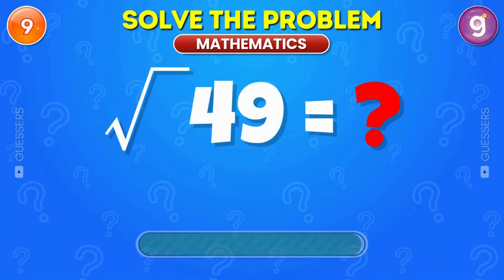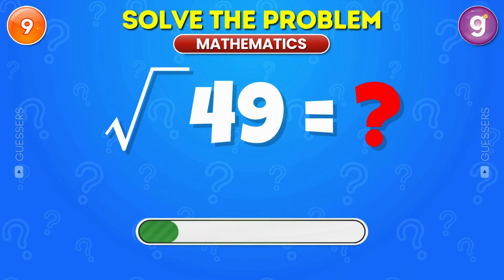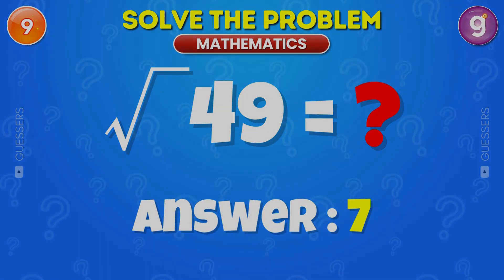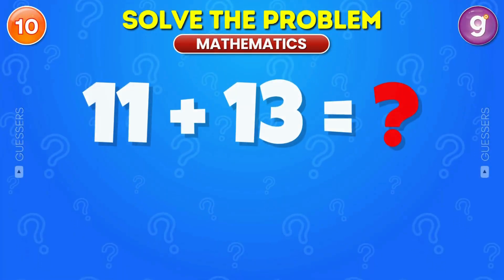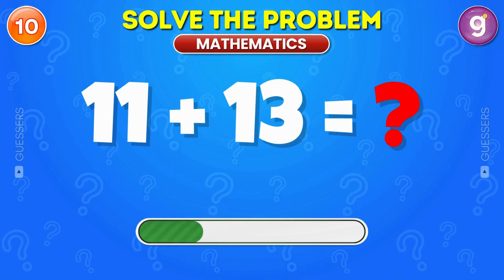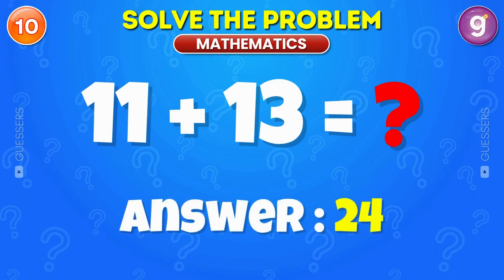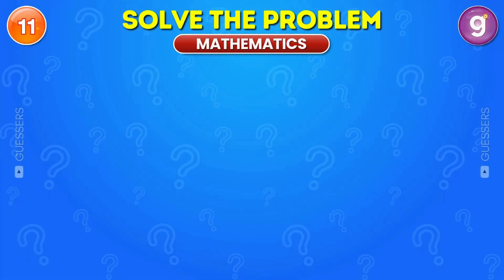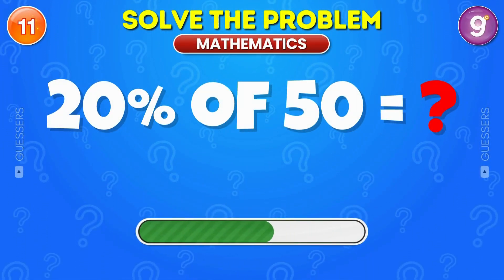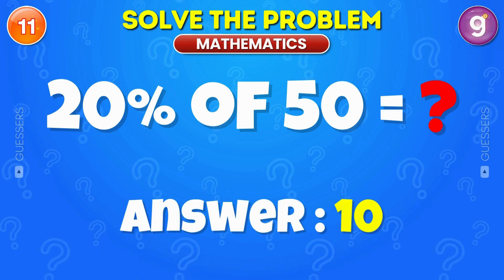What is the square root of 49? It's 7. What is 11 plus 13? It's 24. Find 20% of 50. It's 10.